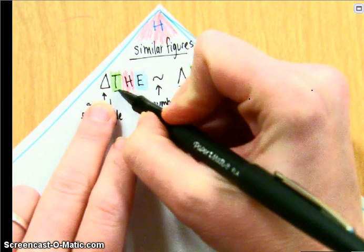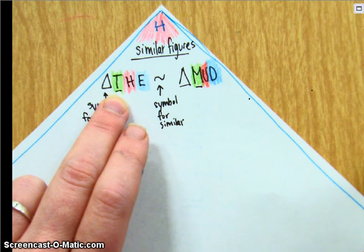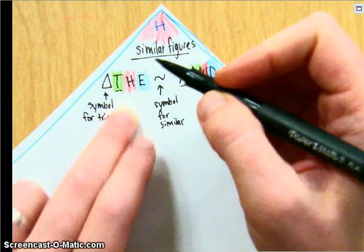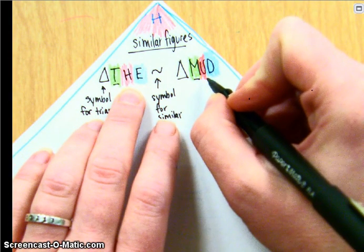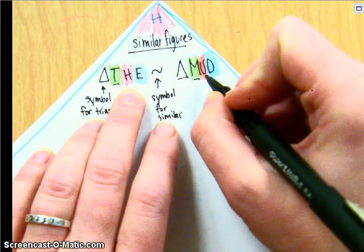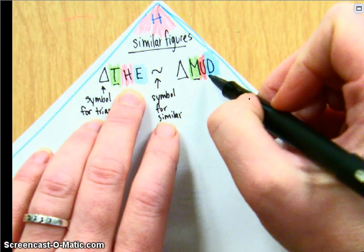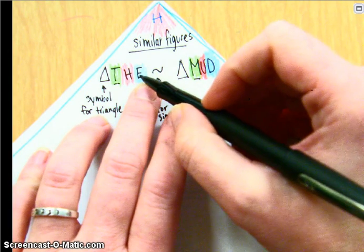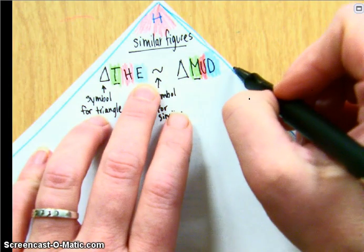Please note, and this is important, that this T and this M are the ones that are similar. They are what's called corresponding angles. Angle H and angle U are in the same place in your similarity statements. They are in the middle or second place. So these two are corresponding angles. Same thing with E and D. They are both in third place or last place. They are the corresponding angles.